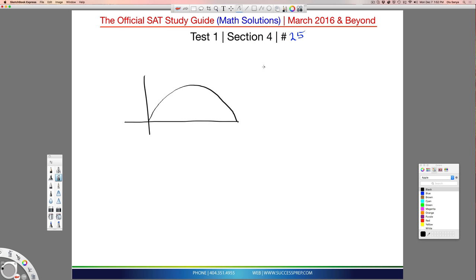This situation is described by this equation: minus 4.9 T squared plus 25 T.